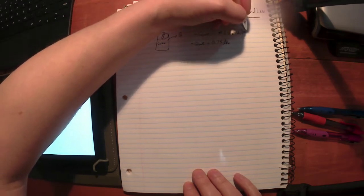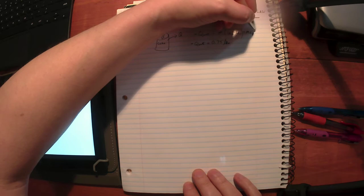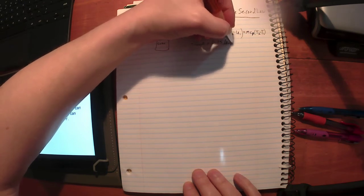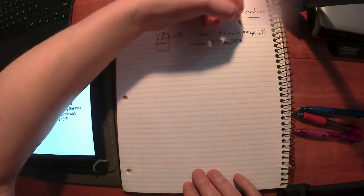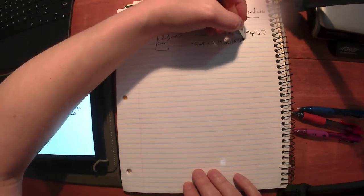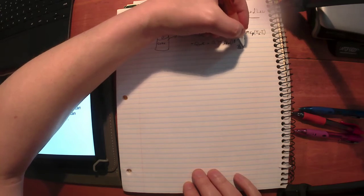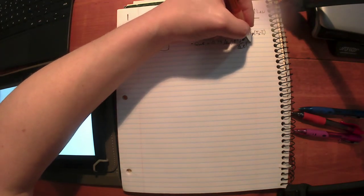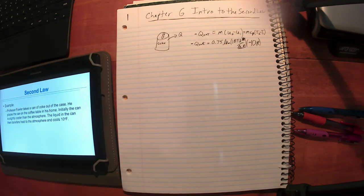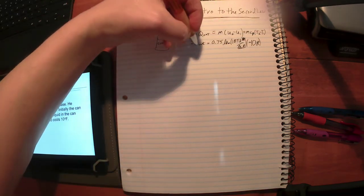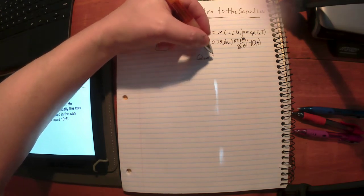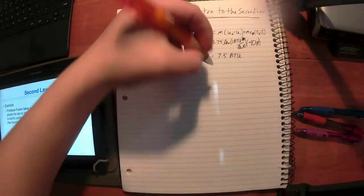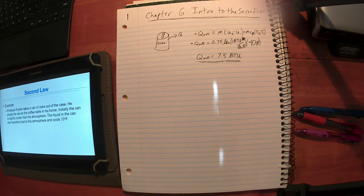Instead of delta U, let's say m times c sub p because it's liquid, times T2 minus T1. Now coke is essentially water. The specific heat of liquid water is essentially one BTU per pound-Rankine. You guys know how I write my units, they're there, they may not be pretty but they're there. Let's say it's going to lose 10 degrees Rankine, 10 degrees Fahrenheit which is 10 degrees Rankine. You can see what happens: the first law says as long as the heat loss by this can is 7.5 BTUs, go for it, no problem. First law says that's possible.